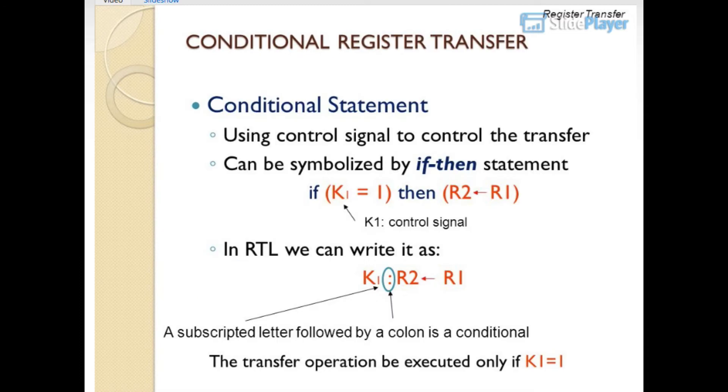Conditional register transfer: conditional statement using control signal to control the transfer can be symbolized by an if-then statement. If K1 equals 1, then R2 gets R1. In RTL we can write it as K1: R2 gets R1. The transfer operation is executed only if K1 equals 1. K1 is a control signal. A subscripted letter followed by a colon is a conditional.